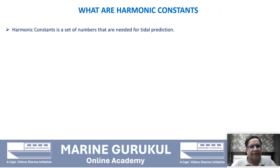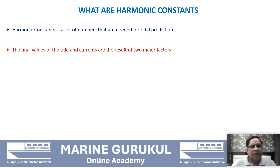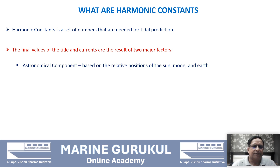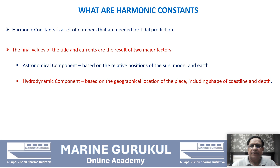A harmonic constant is a set of numbers that are needed for tidal prediction. The final values of tide and current are the result of two major factors: one, an astronomical component, and two, a hydrodynamic component.